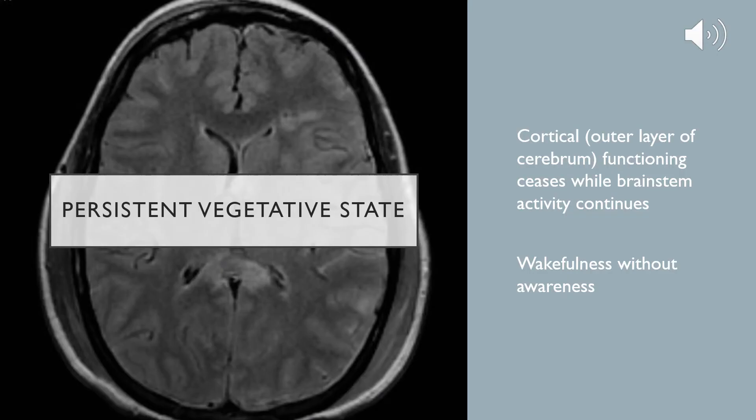Next, we will discuss persistent vegetative states. This is where the outer layer of your cerebrum loses function, but your brain stem activity is maintained, so you could still have reflexes present but be unable to conduct yourself purposefully. Some professionals refer to this as wakefulness without awareness. This condition is typically diagnosed after four weeks in a vegetative state and can potentially be later classified as a permanent vegetative state if improvement does not occur.